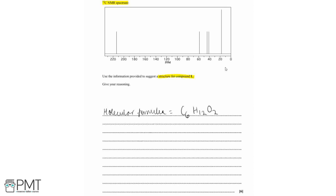Looking at the carbon-13 NMR spectrum, the number of peaks equals the number of carbon environments. We can see five different peaks on the spectrum, meaning there are five carbon environments. Since our compound has six carbons, two of those carbons must be in the same environment, indicating some degree of symmetry in the molecule.